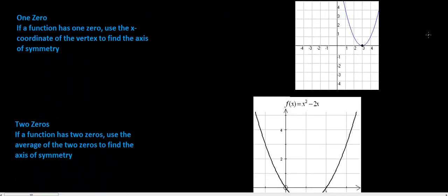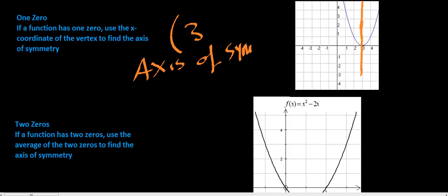Okay, so let's say we've got one zero. Well, your axis of symmetry is going to go through your vertex. So your axis of symmetry is just going to be three. And for your axis of symmetry, all we're looking for is just the X value.